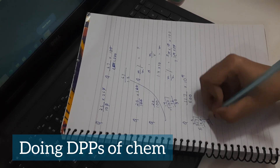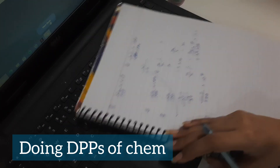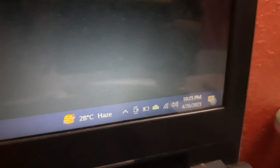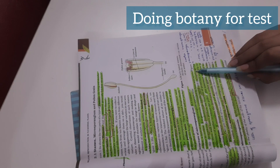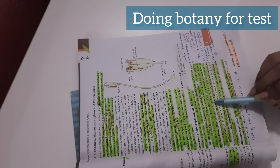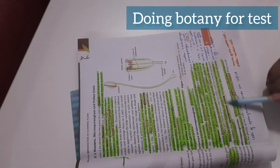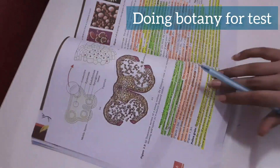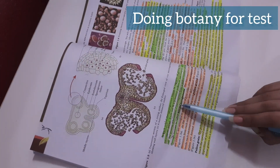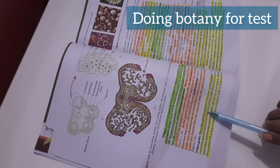Then at around 6:30 in the evening and at night around 10:00–10:30 I had dinner. After the break, I went to botany for the test, which was just pollen grains — just a small part. I did that and then did the 3 DPPs for the botany test.